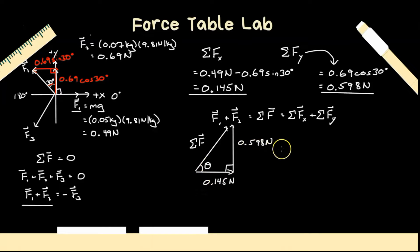Now this is a nice right-angled triangle, so I can easily figure out its magnitude and direction. Let's start with its magnitude. That's just Pythagorean theorem. So the magnitude of that F net is a squared plus b squared equals c squared. So we're going to take the square root of 0.598 squared plus 0.145 squared, and we get 0.62 newtons.